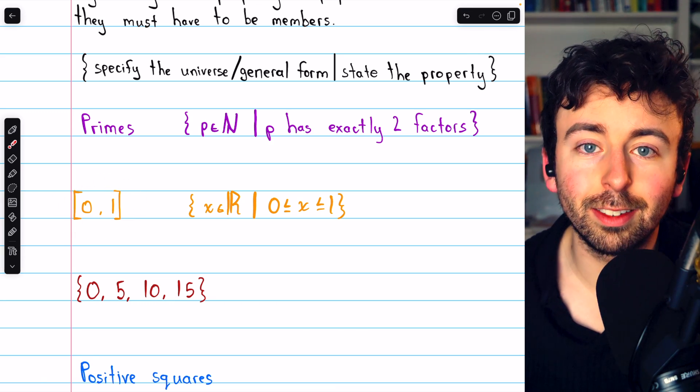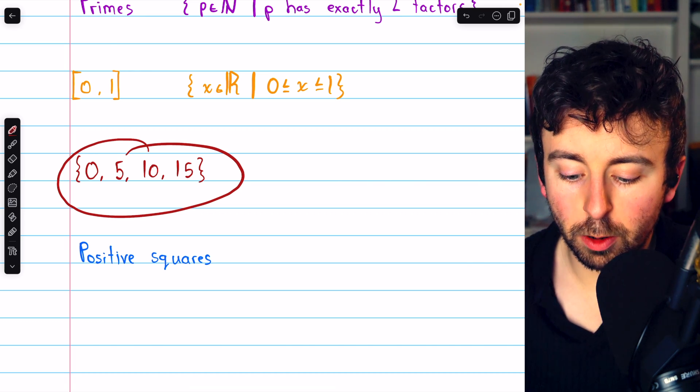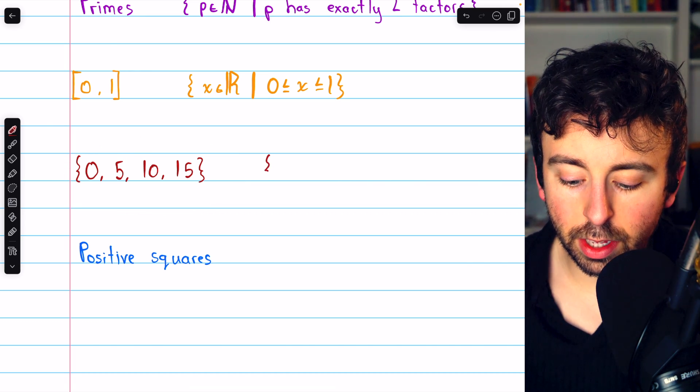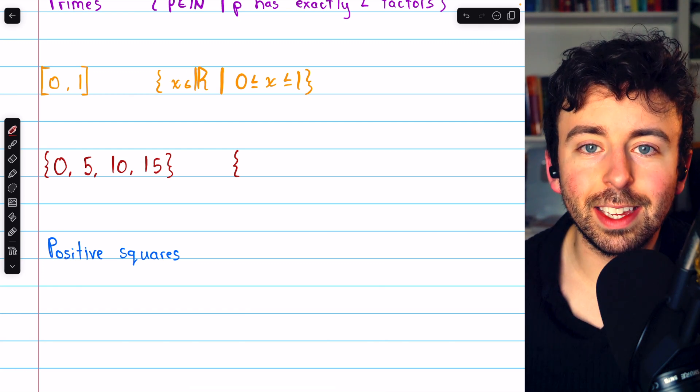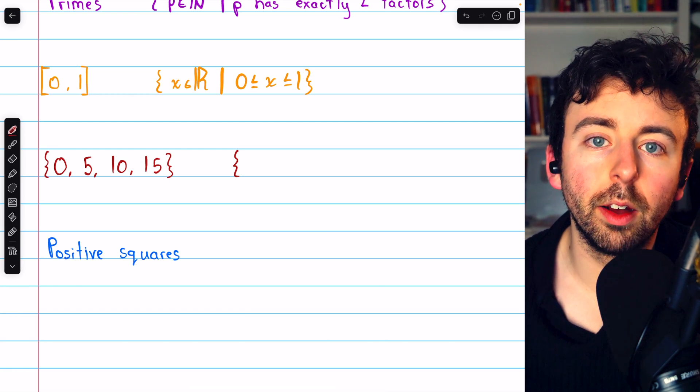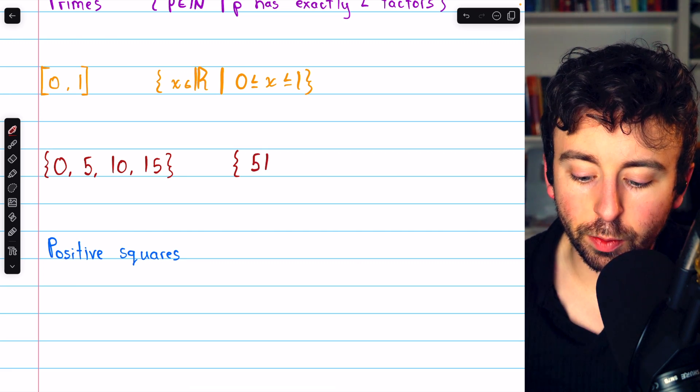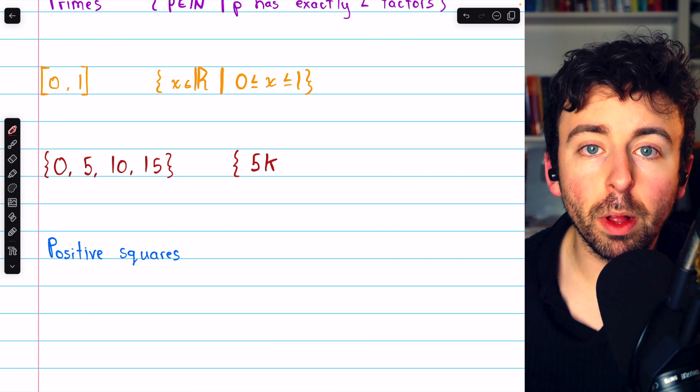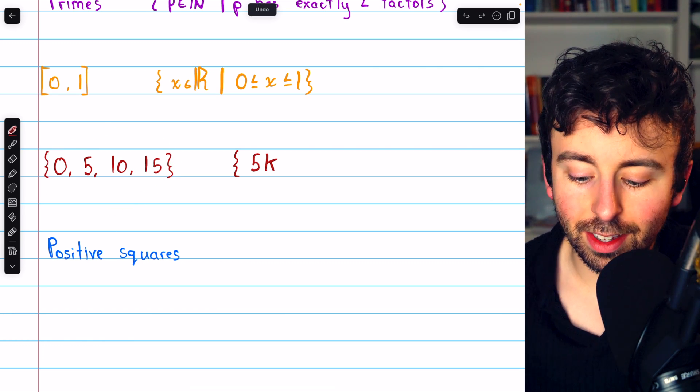What about this set, the multiples of 5 from 0 to 15? For this one, it might be more convenient to begin by describing the general form of our elements. The general form of our elements is 5k, because these are multiples of 5. But to really capture everything that's in this set, we need to be a little bit more specific about k.